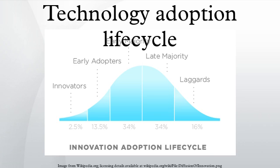Others have since used the model to describe how innovations spread between states in the U.S. The technology adoption life cycle model describes the adoption or acceptance of a new product or innovation, according to the demographic and psychological characteristics of defined adopter groups. The process of adoption over time is typically illustrated as a classical normal distribution or bell curve. The model indicates that the first group of people to use a new product is called innovators, followed by early adopters. Next come the early and late majority, and the last group to eventually adopt a product are called laggards.